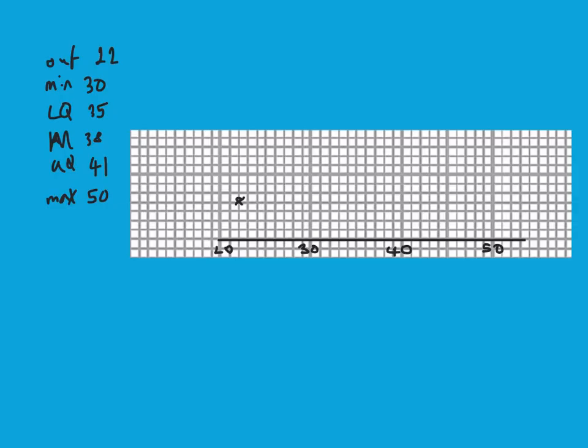Then my minimum is 30, my maximum 50, my median at 38. It's easier for you, it's quite hard to do this on here. And then I've got 41, I've got 35, and there is my box plot, and hopefully yours is a bit neater. But please note the outlier at 22.